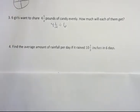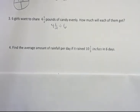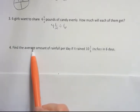Find the average amount of rainfall per day if it rained 10 and a third inches in six days. Well, you remember how we found the average before we added everything up and then we divided by the number of things that we added. This has just been added up for us. So whenever you see find the average, you're going to have to divide in that problem.